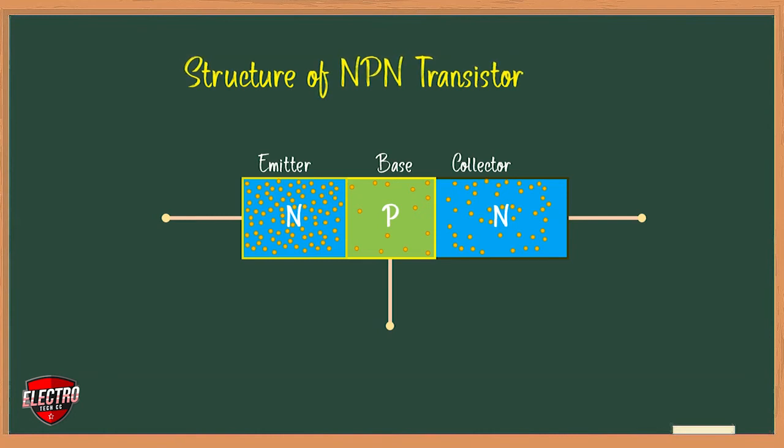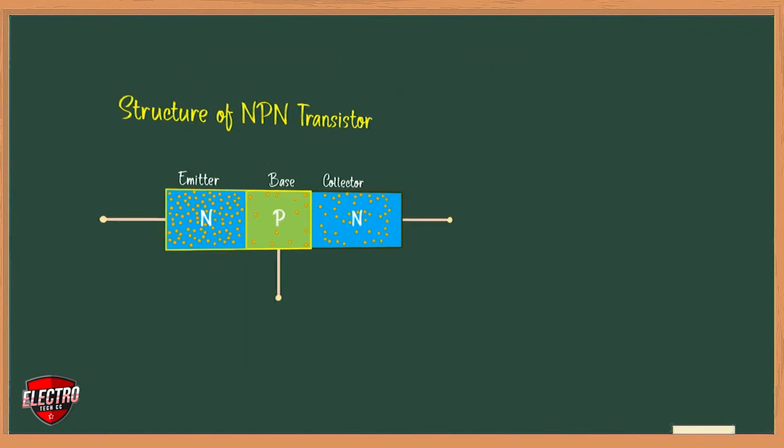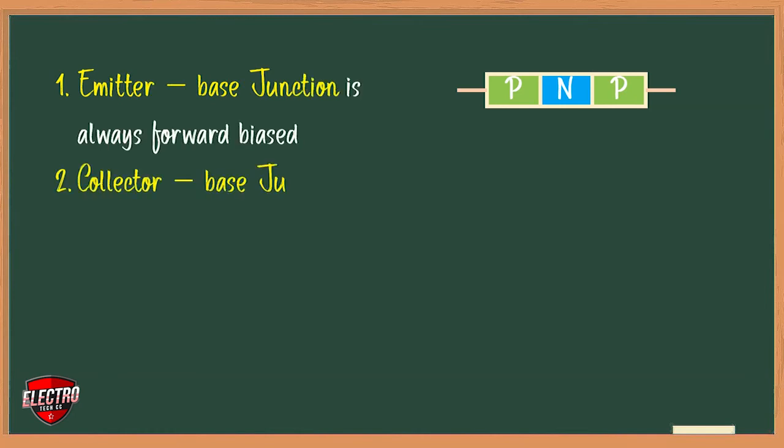For proper working of the transistor, it is essential to apply voltage of correct polarity across its two junctions. Now let us discuss transistor biasing. First, the emitter-base junction is always forward biased, and second, the collector-base junction is always reverse biased in normal condition.